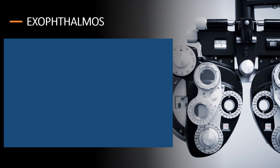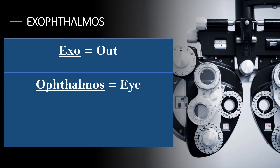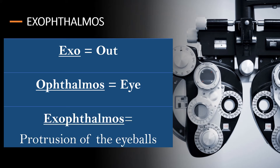The term exophthalmos is derived from two word parts: exo meaning 'out' and ophthalmos meaning 'eye,' that are combined to form exophthalmos, meaning protrusion of the eyeballs.